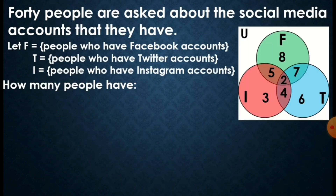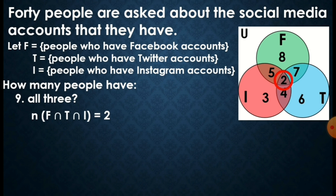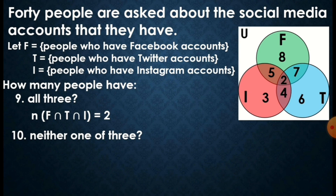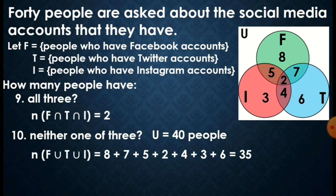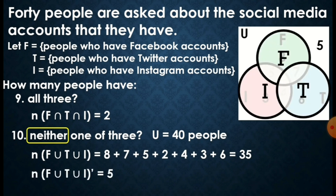Next problem: how many people have all 3? Remember, 'all 3' — that is the intersection of the 3 sets. Nasa pinakagitna yung nag-intersect yung tatlong sets, and that is 2. How about neither 1 of the 3? When you say 'neither,' that is the complement of the 3 sets — yung elements na wala sa tatlong sets pero nandun sa universal set. Our cardinality of the universal set is 40 since yun yung mga taong tinanong natin. First, sum up all the elements of the 3 sets: the sum is 35. Then, 40 minus 35 equals 5 — so 5 yung nasa labas ng 3 sets.